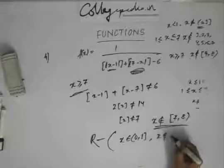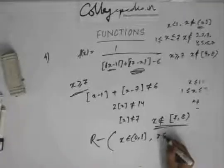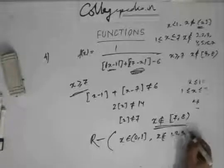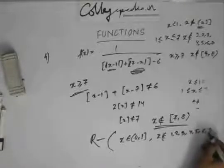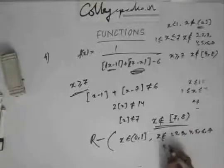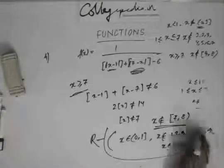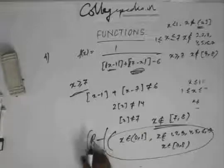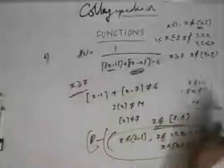We also exclude x belonging to 1, 2, 3, 4, 5, 6, 7 and x belonging to 7 to 8. So I should exclude this whole interval from the real number set to get the domain of this function.